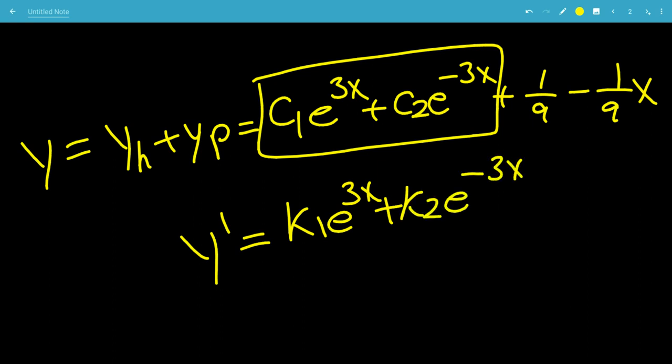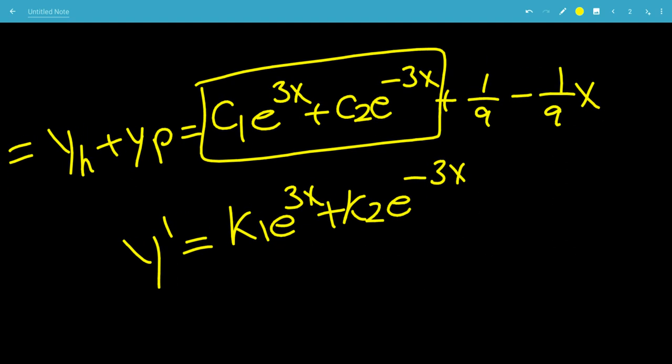Similar thing, c2 times negative 3 would be k2, but it doesn't matter. The derivative of 1 ninth goes to 0, is 0, and the derivative of minus 1 over 9x is just negative 1 over 9.